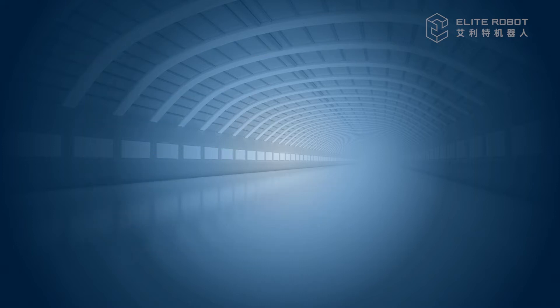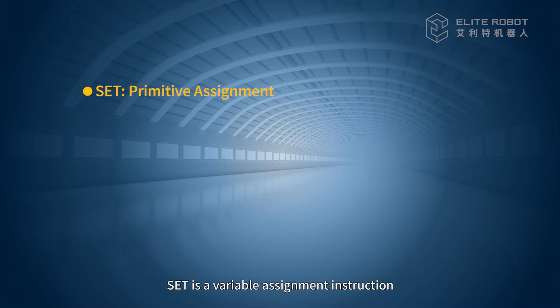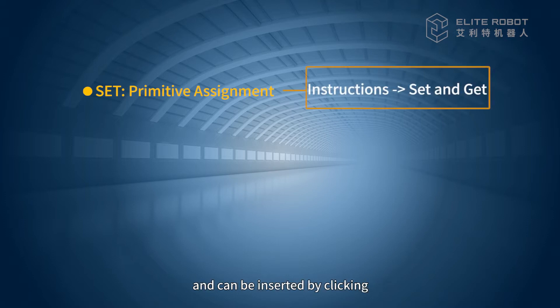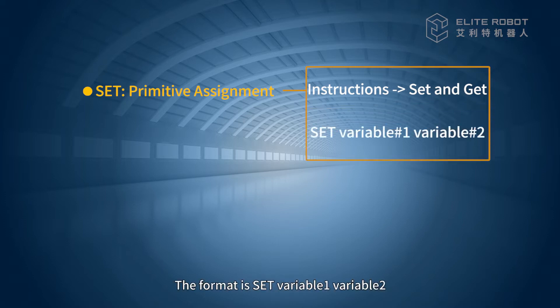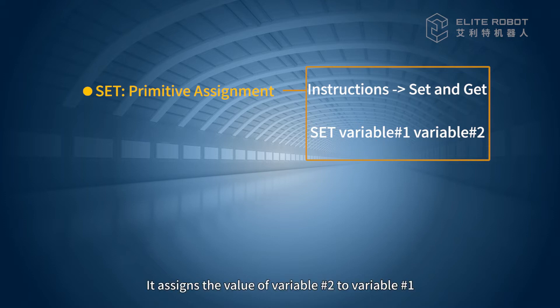Set. In JBI, Set is a variable assignment instruction and can be inserted by clicking Instructions, Set, and Get. The format is: Set variable1, variable2. It assigns the value of variable 2 to variable 1.